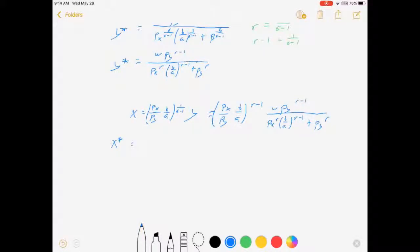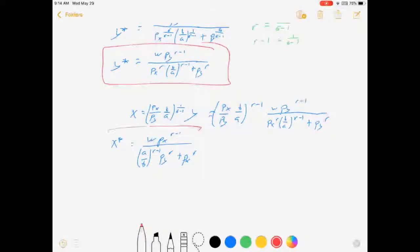x star is equal to w·px^(r-1) over (a/b)^(r-1)·py^r plus px^r. And so these are your Marshallian demand curves from a CES utility function with two goods. And we've assumed the interior solution.